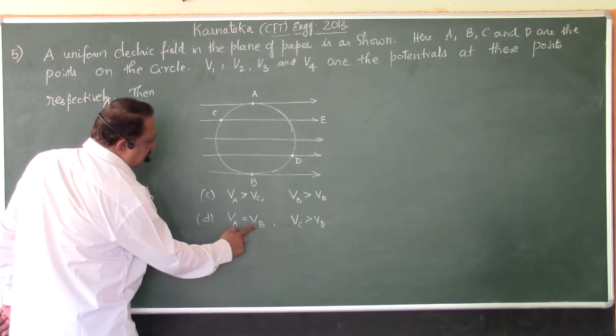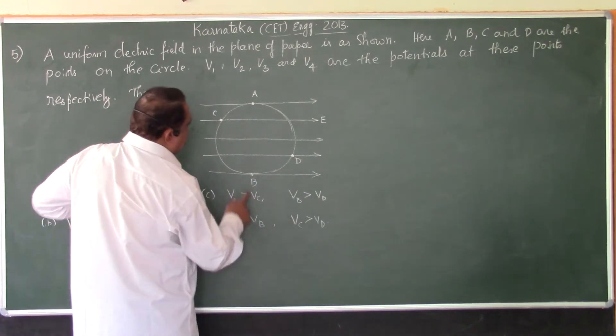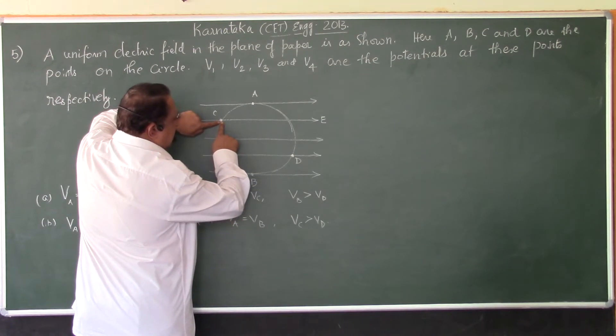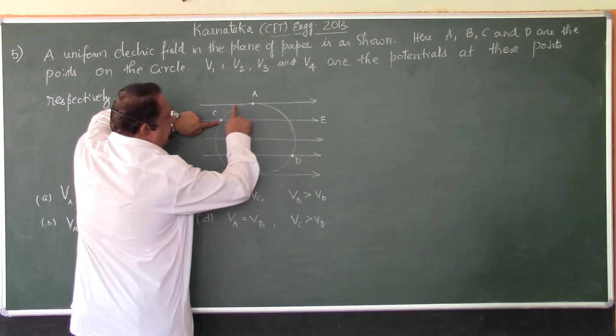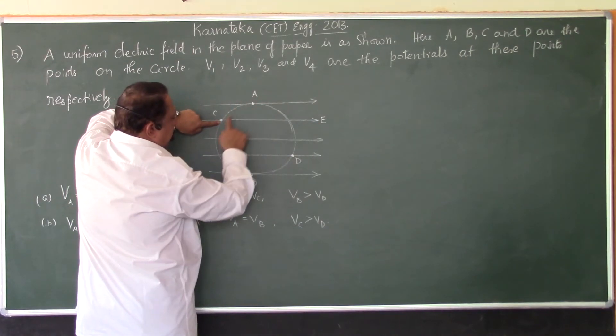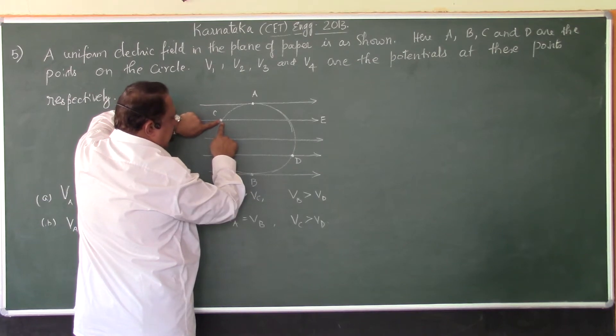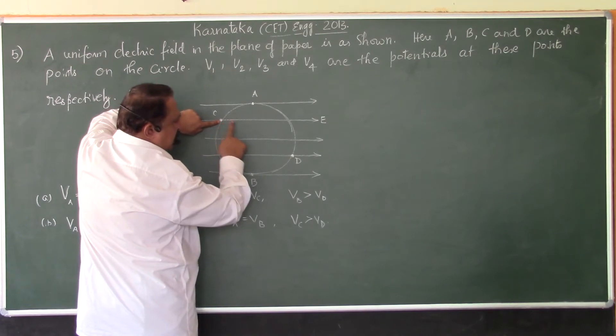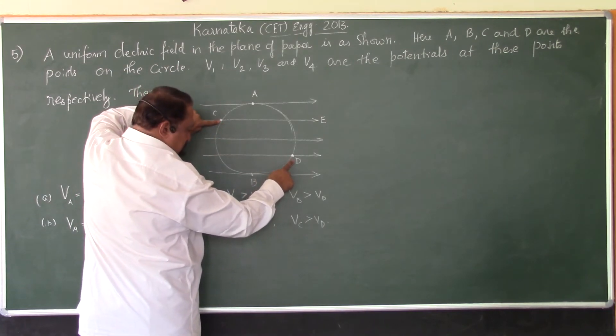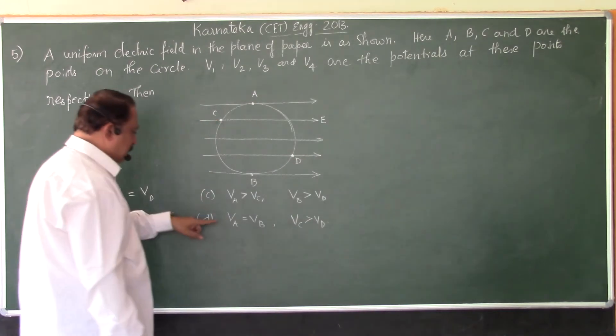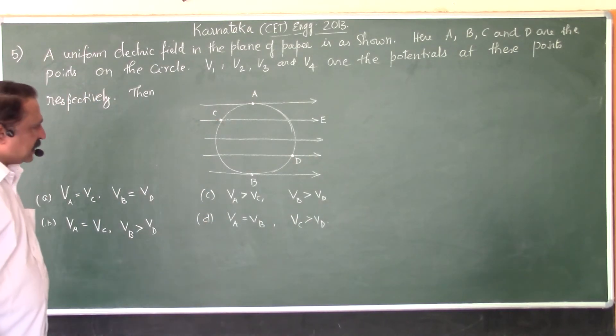And point C is farther from the electric field in the direction of the field. Therefore, the electric potential at C is greater than the electric potential at D. So, C is at higher potential than D. So, VC is greater than VD. So, the right answer is the fourth one.